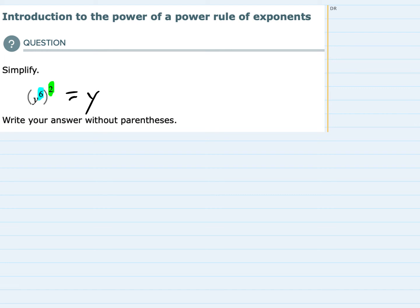So we would have 6 times 2. That would be 12. So the power rule says we multiply inside and outside.